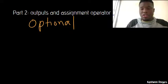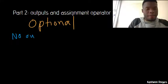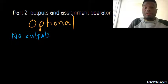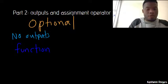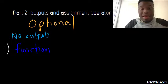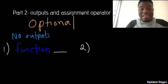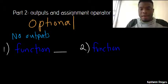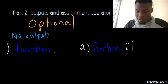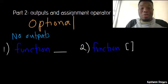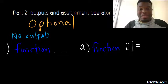If you want to write a function header with no outputs, there are two ways. First, you still have the word 'function', and then you can just leave a blank — nothing there. The second way is to explicitly tell MATLAB you have no outputs by using empty square brackets followed by an assignment operator. That's explicitly telling MATLAB that you're assigning to nothing, so you have no outputs.